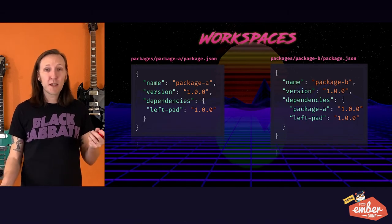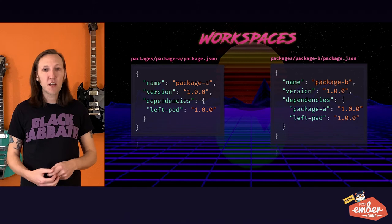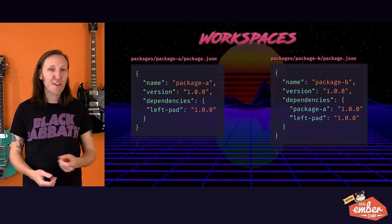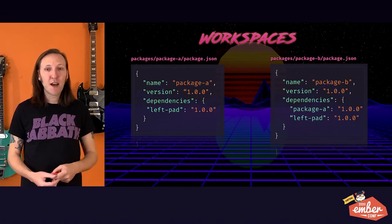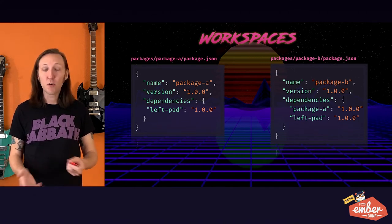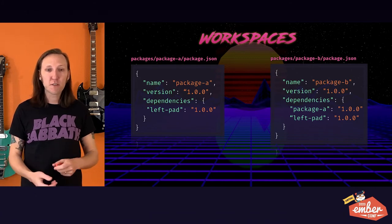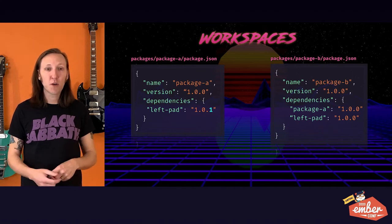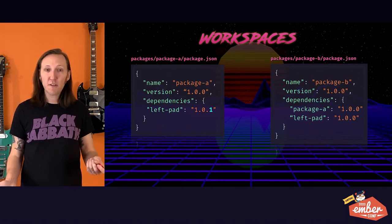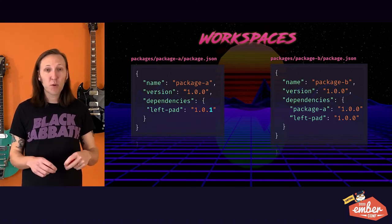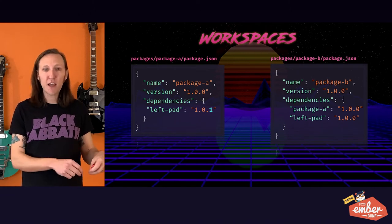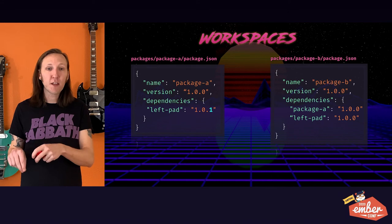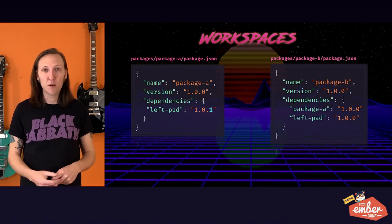When you bring in additional dependencies, if the versions of a package — say 'left-pad' — are both 1.0.0 in two packages, Yarn installs one instance in the root node_modules available to both. But if package A now needs left-pad 1.0.1, Yarn installs 1.0.1 in the local node_modules for package A and leaves 1.0.0 available to package B in the root node_modules.